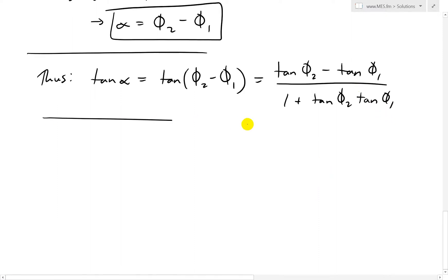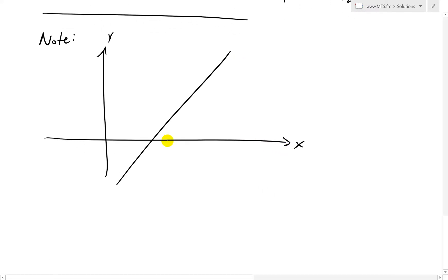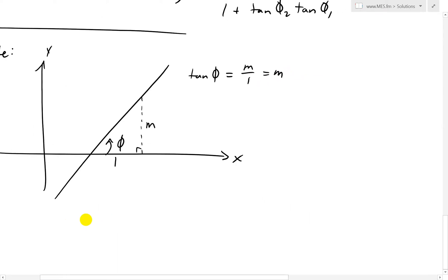But note that these are just slopes. For any typical line in the xy-plane, if we have a line like this making angle phi, and we do rise over run where we're rising by its slope m and running by 1, then tan phi equals, by definition, opposite over adjacent, which is m over 1, which equals m, which equals the slope of the line.